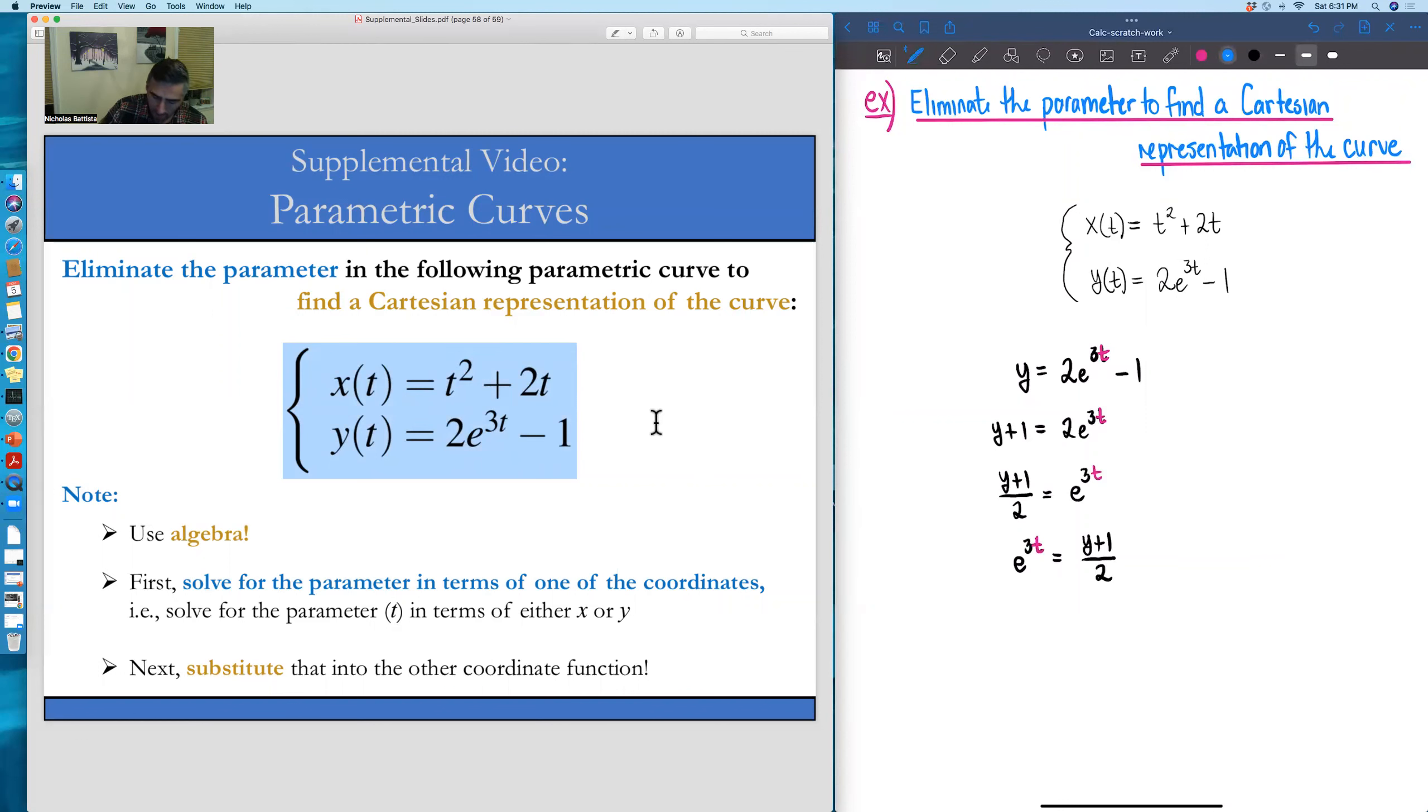Now, the next thing that we need to do is figure out how can we get that t by itself when it's upstairs inside the exponential function. And well, the inverse function for an exponential is, in this case, since the base is e, it's a natural log. So we can take the natural log of both sides of this equation.